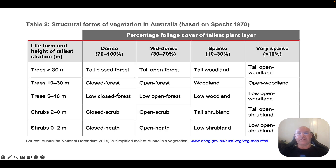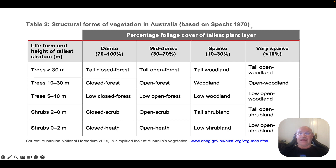So what is SPEC's? It's a system designed to classify vegetation in Australia — Australian bushlands. It's over 50 years old now, and it basically classifies bushland based on two things: the height of the trees and the percentage foliage cover.